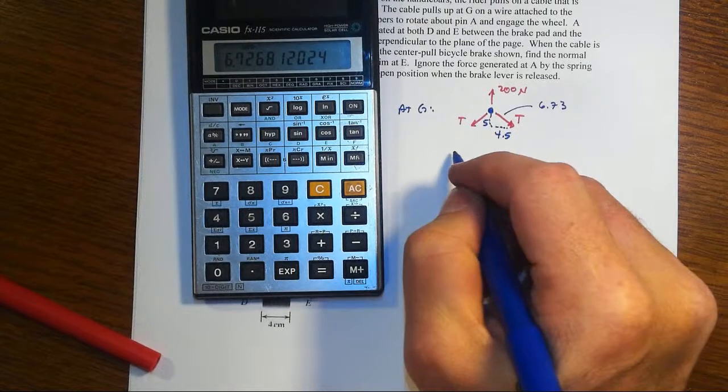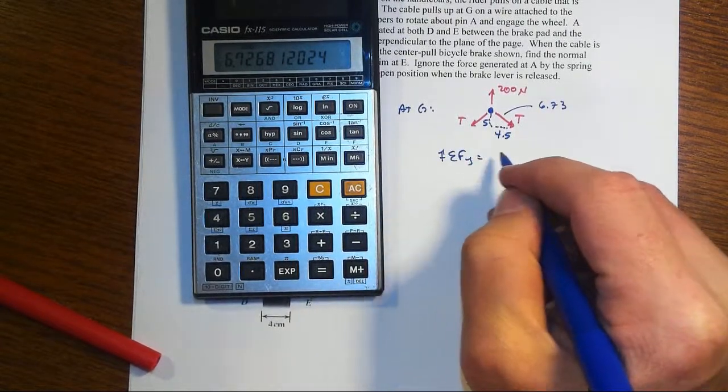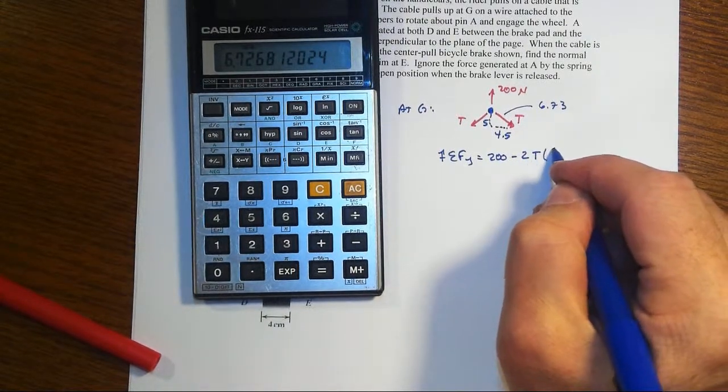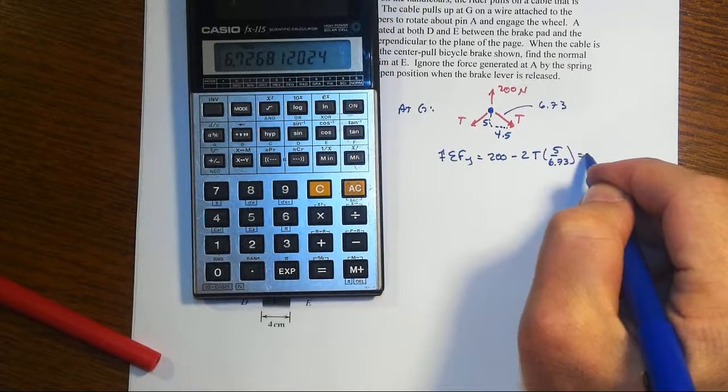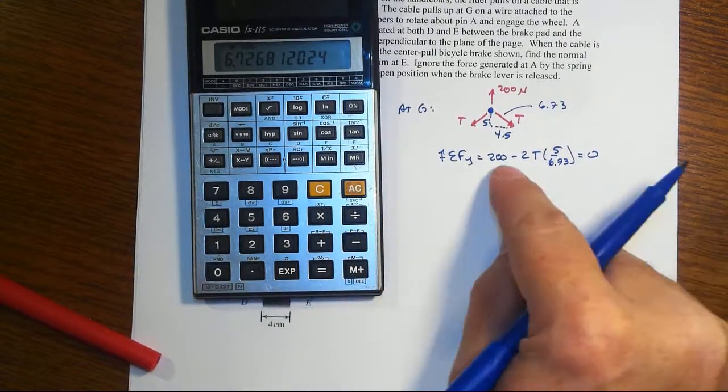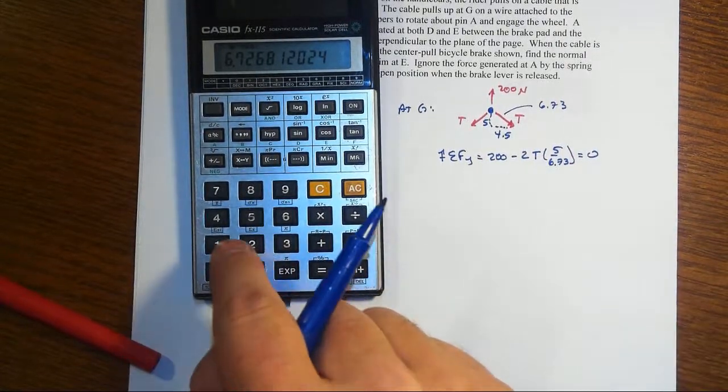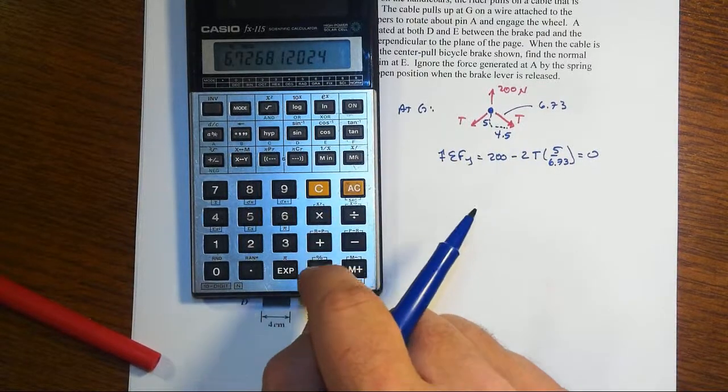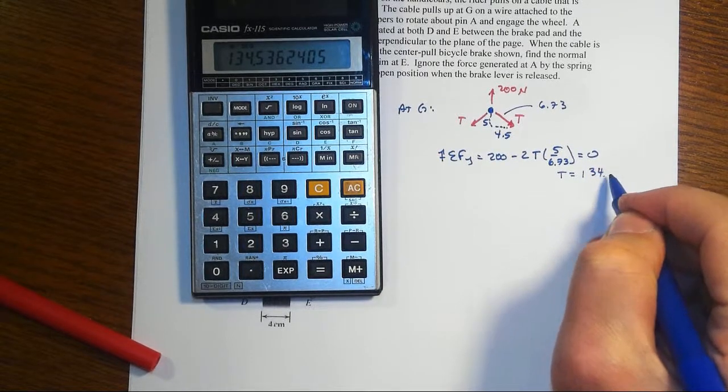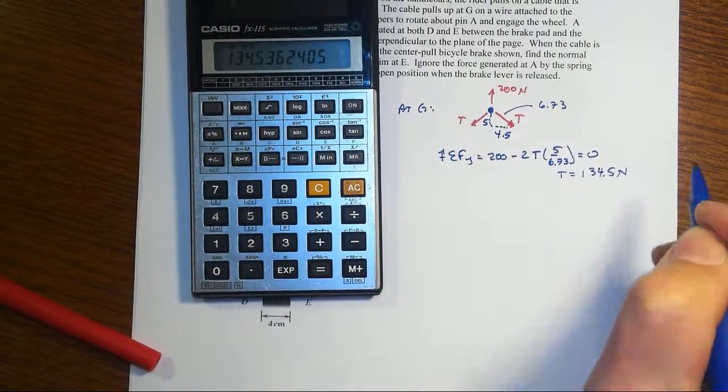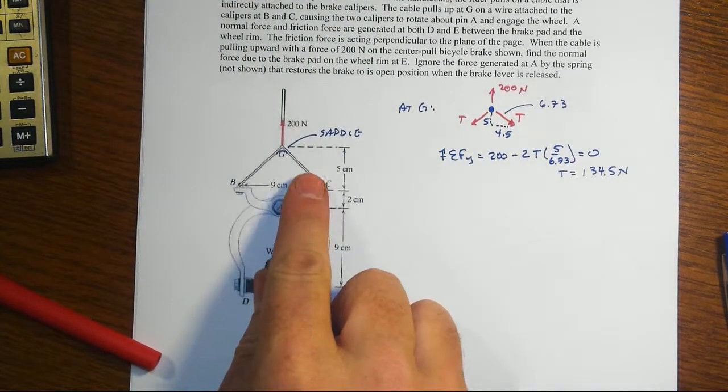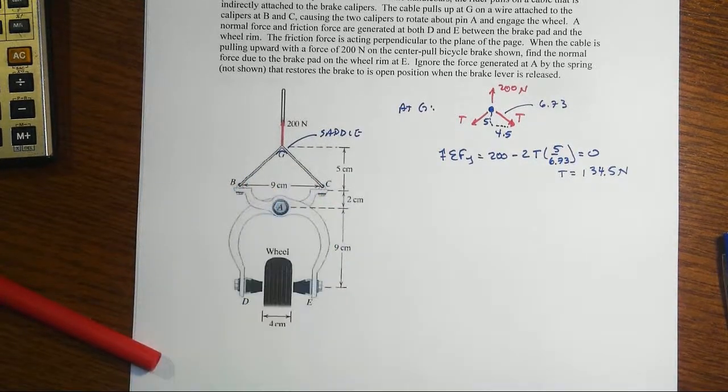So that would be sum of forces in the Y. We can take up positive. You'd have 200 minus 2 times T times 5 over 6.73 set equal to 0. And what will we find out? 200 divided by 2 is 100. 100 divided by 5 times 6.73. And so the force in one of those cables is 134.5 newtons. They're equally the same here. So that tells us then what's happening in this little wire that goes over there.